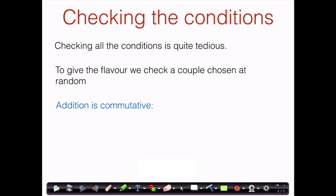To check all the conditions for being a vector space is quite tedious — remember we have 10 conditions to check. Most of the time these conditions are going to follow from the analogous properties for real numbers. Just to give you the flavor of these proofs, let's check a couple of the conditions chosen at random.